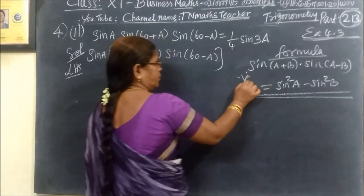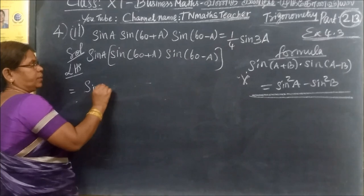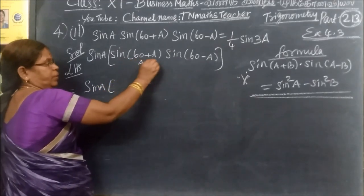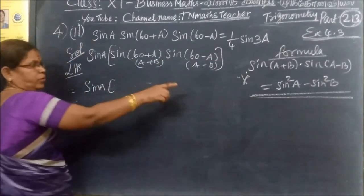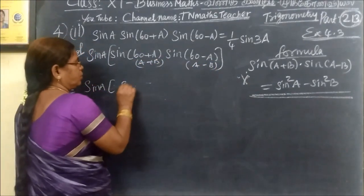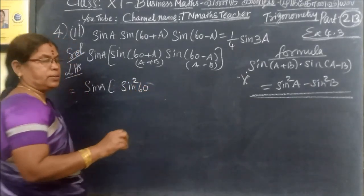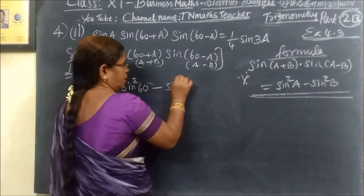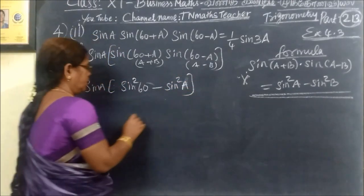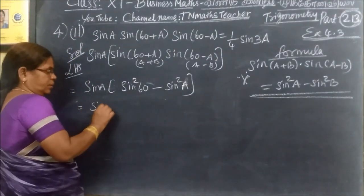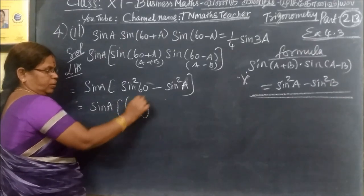So using this formula: equal to Sin(A+B) · Sin(A−B), which gives Sin²A minus Sin²B. Here A equals 60, then minus Sin²B, where B equals A. So Sin²A, and you know Sin(60) equals root 3 over 2.